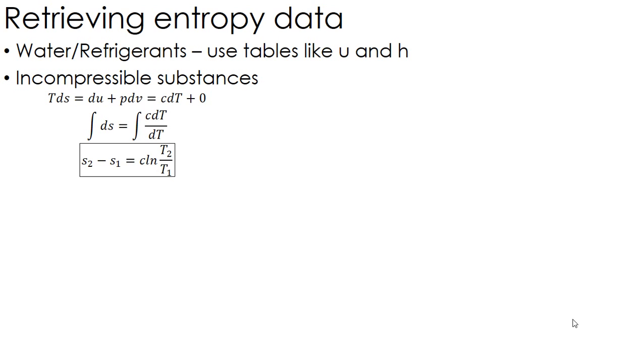And there's a bit of a typo there that should just be a T on the denominator, not a DT. Doing that integral, I get the change in S equals the specific heat times the natural log of T2 over T1. I only use this when I have incompressible substance, solid, liquid, and I have specific heat value. Again, if I have a table, you should use the table. But if you don't have a table, this is the next best way.